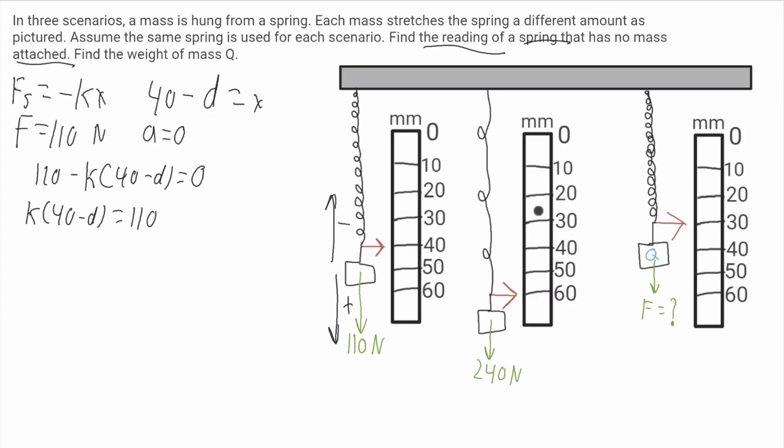Now let's deal with spring two. I'll keep my condition for down positive and up negative, and the force of the spring will be equal to negative k. This time x will be 60 minus d and the force I'll call F2 will be 240 newtons. I'll do the same thing. I'll get k times 60 minus d is equal to 240.